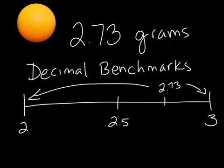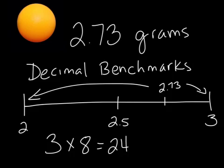Using decimal benchmarks, we would round up 2.73 to 3. We would then multiply it by 8, because we're looking for the mass of 8 ping-pong balls, and we would find a total of 24 grams.